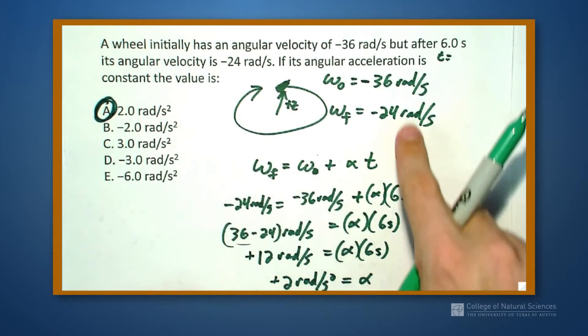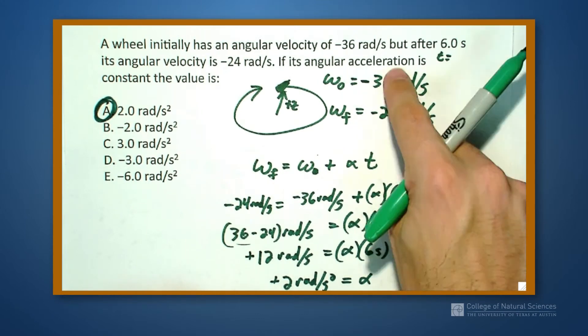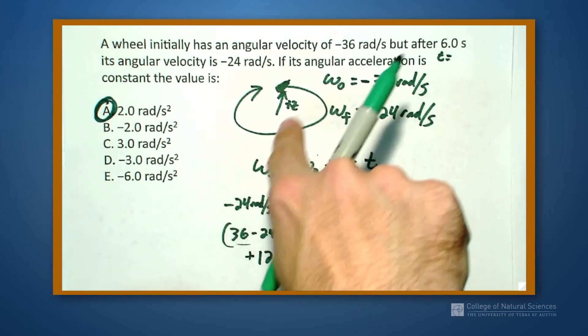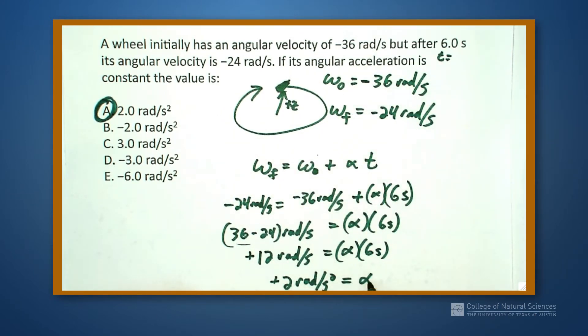I'm going to do a quick check on this one. I go from minus 36 to minus 24. So this is clearly slowing down its rotation speed. So it's rotating and it's getting slower as it rotates. And if I'm getting slower, I know that my angular acceleration has to be in the opposite direction of my angular velocity.